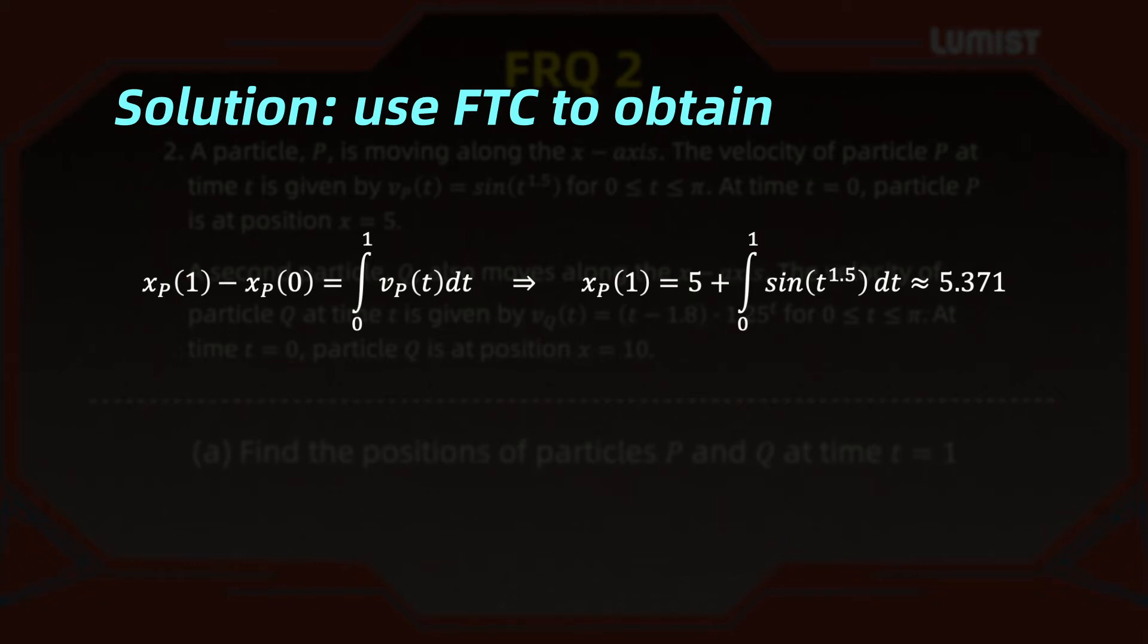We apply the same reasoning for the position x for particle Q. Now x_Q(1) minus x_Q(0) gives us the integral from 0 to 1 of the velocity of particle Q at t. We're given the initial condition, so x_Q(0) equals 10. So 10 plus the integral from 0 to 1, and then we use v, which is (t - 1.8) times 1.25 raised to the power of t dt. After plugging in these values into a calculator, we get the approximation 8.564. So that's part A.